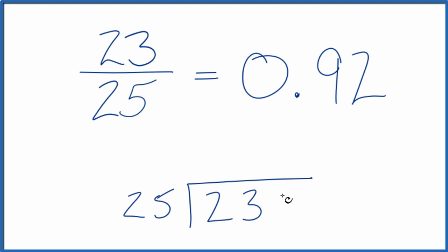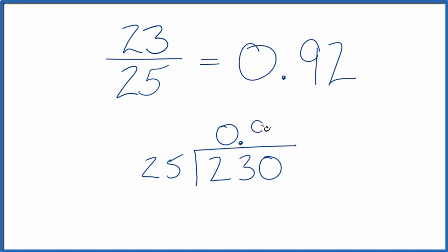25 doesn't go into 23. Let's call this 230, and we'll have to put a zero with a point up here. So 10 times 25 would be 250. 9 times 25 would be 225.